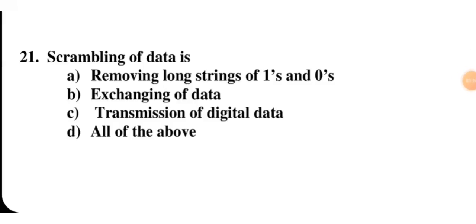Scrambling of data: when there is a long string of 1s and 0s — for example, many consecutive 0s — the receiver cannot identify whether data is actually being transmitted and may receive the same bit repeatedly. To solve that problem, we use scrambling. Scrambling is used for removing long strings of 1s and 0s, so this option is correct.